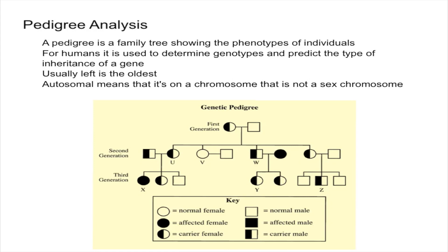Sex-linked traits are going to affect males more often than females. For example, color blindness is a sex-linked trait. Males have one X chromosome and one Y chromosome, so if a male gets a faulty gene — like one representing color blindness — it's always going to be expressed because there's no other chromosome to mask it. Females have two X chromosomes, so if they get one bad allele, the other can take over, assuming the trait is recessive.